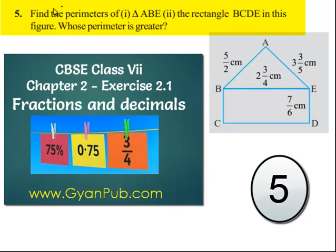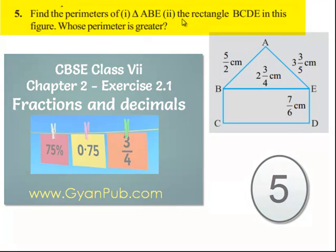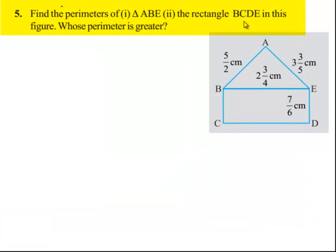Let us move on to the next question. Find the perimeter of triangle ABE and rectangle BCDE in the figure shown. And also find whose perimeter is greater. So let us move on to the solution.